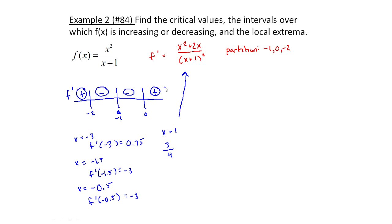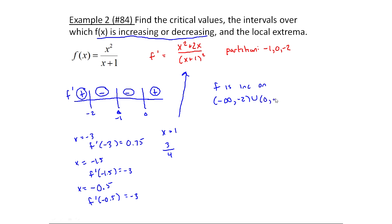f of x is increasing on the intervals minus infinity to minus two, union zero to infinity. f is decreasing on the intervals minus two to minus one, union minus one to zero. Notice I'm not including minus one in a single interval, because minus one was not a critical value — something else is going on at that point, so it needs to be excluded.